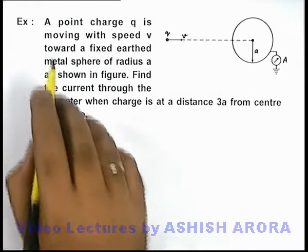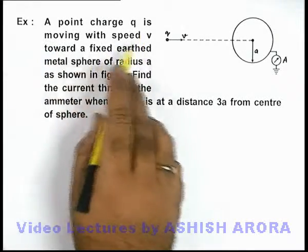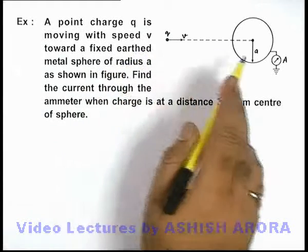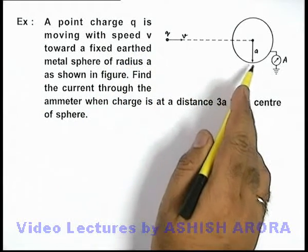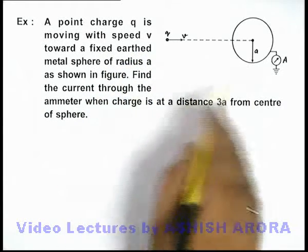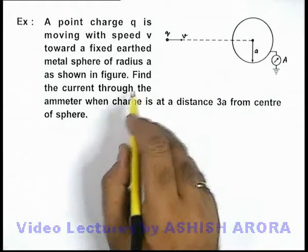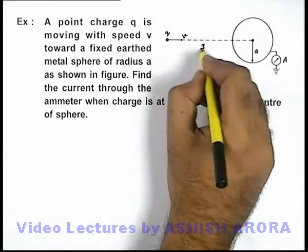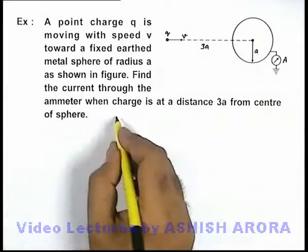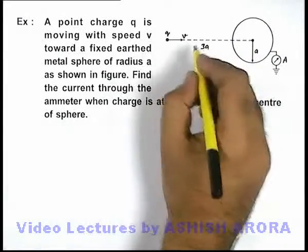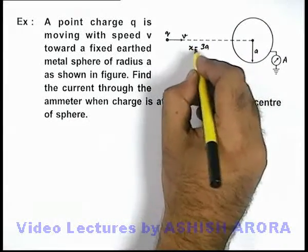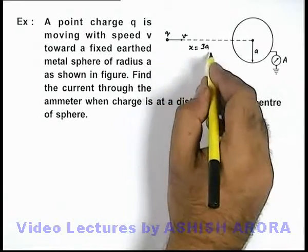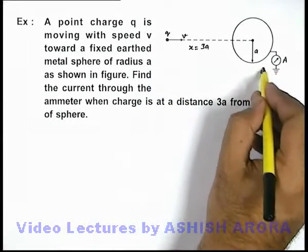In this example we are given that a point charge q is moving with a speed v toward a fixed earthed metal sphere of radius a, as we can see here. We are required to find the current through this ammeter when the charge is at a distance 3a from the center of sphere. Obviously as the charge is moving the distance is varying, so when this x is equal to 3a we are required to find the current through the ammeter.